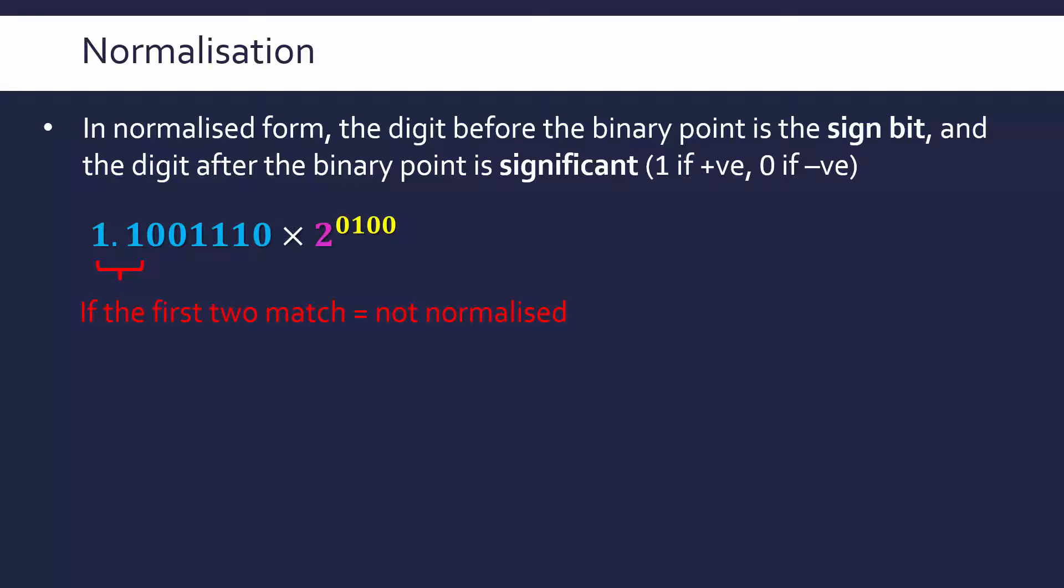Because 2's complement is really flipped, a 1 is insignificant, whereas a 0 is significant. And so a quick way of checking to see if it is normalised or not, is if the first two digits match, either in positive or negative, it means our number is not normalised and so we've got to fix it.